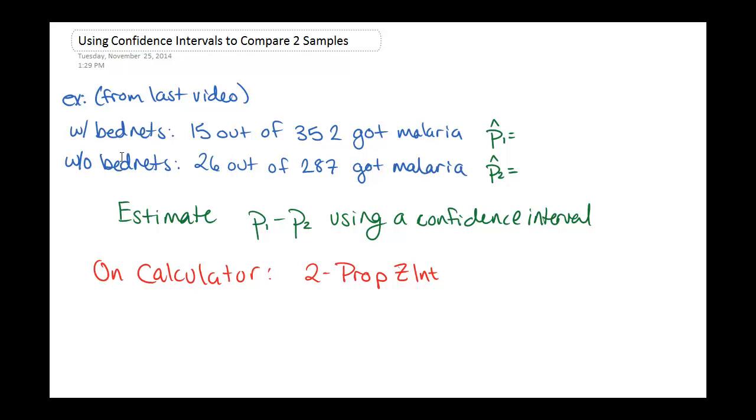So this example is a continuation from the last video where we're looking at infants with bed nets and without bed nets and how many of them got malaria. So we did a hypothesis test for this in the first video to look at is the proportion with bed nets lower than the proportion without bed nets? And we did conclude that it was.